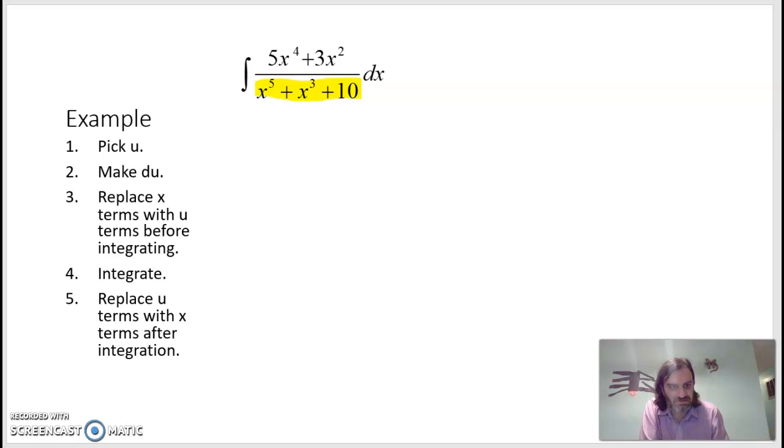I'm going to let the denominator be u. So u will be x to the 5th plus x cubed plus 10. And then I'm going to take the derivative of that. So du will be 5x to the 4th plus 3x squared dx. And this one was created perfectly for u substitution. So while the bottom is going to be u, the top and the dx are going to be du.